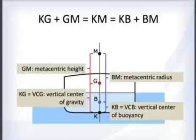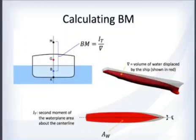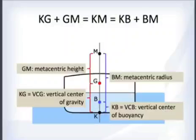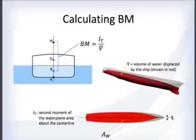G comes from loading; the center of buoyancy comes from the underwater volume. If you can calculate BM, you know where M is, and then you can calculate KM and back out GM, which is what we're after.